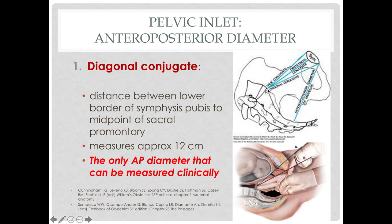The diagonal conjugate is the distance between the lower border of the symphysis pubis up to the sacral promontory, and this measures approximately 12 centimeters. This is the only conjugate that can be measured clinically. The obstetrical conjugate and the true conjugate cannot be measured directly; however, their measurements can be indirectly estimated using the diagonal conjugate.